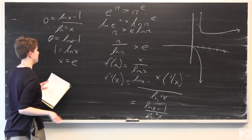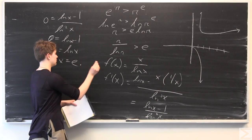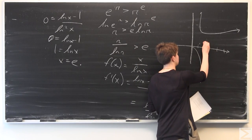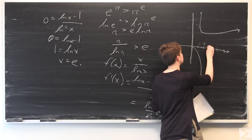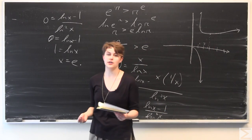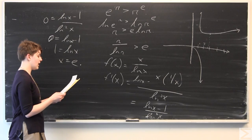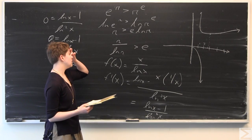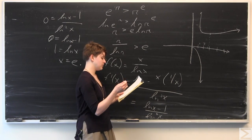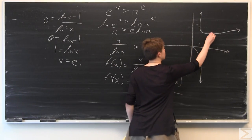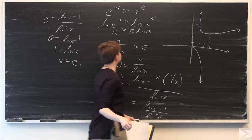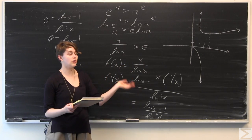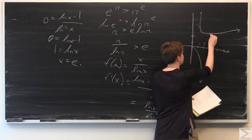So x equals e is where we have our local minimum on the x-axis — at about 2.71. To find the y-value, we plug in f of e: e over ln e equals e over 1, which is e. So f of e equals e, and our local minimum occurs at the point (e, e).